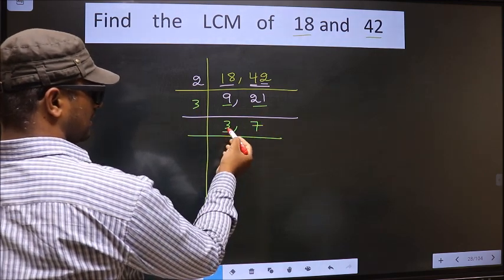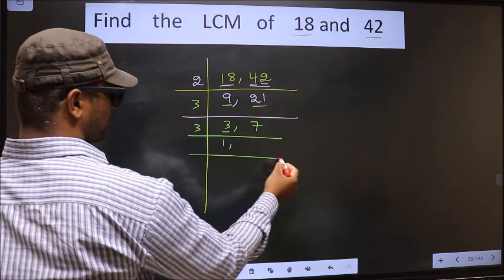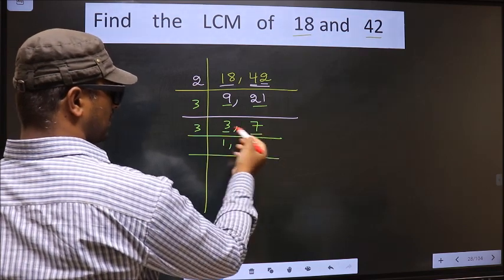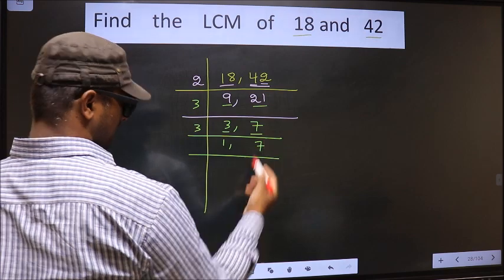Now we have 3 here. 3 is a prime number. So 3, 1 is 3. The other number 7, not divisible by 3. So you write down 7 as it is.